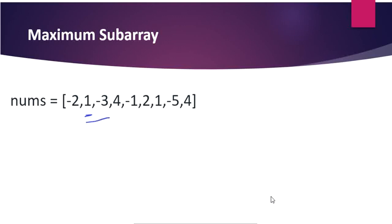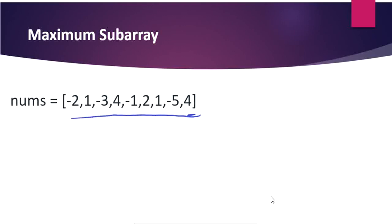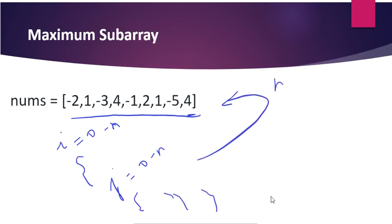At the second iteration it starts from 1, adds 1, 3, then 1, 3, 4, then 1, 3, 4, minus 1, and so on. It iterates every possible number in the array by setting i from 0 to n and an inner loop j from 0 to n, adding all possible values. If we find a maximum it will be returned. This algorithm runs in O(n²) or O(n³) — you can come up with this algorithm in both quadratic and cubic solutions.